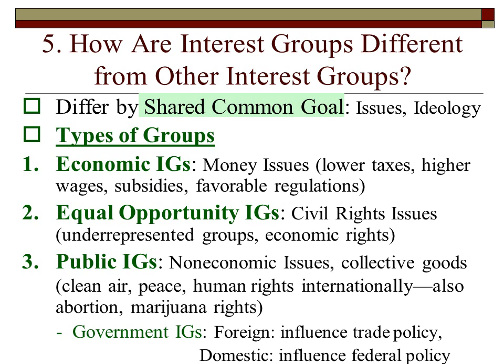Three types to know: first, economic interest groups, which particularly deal with money issues — things like lowering taxes, raising wages for low-income workers, farm subsidies for California vegetable growers, or favorable trade regulations.